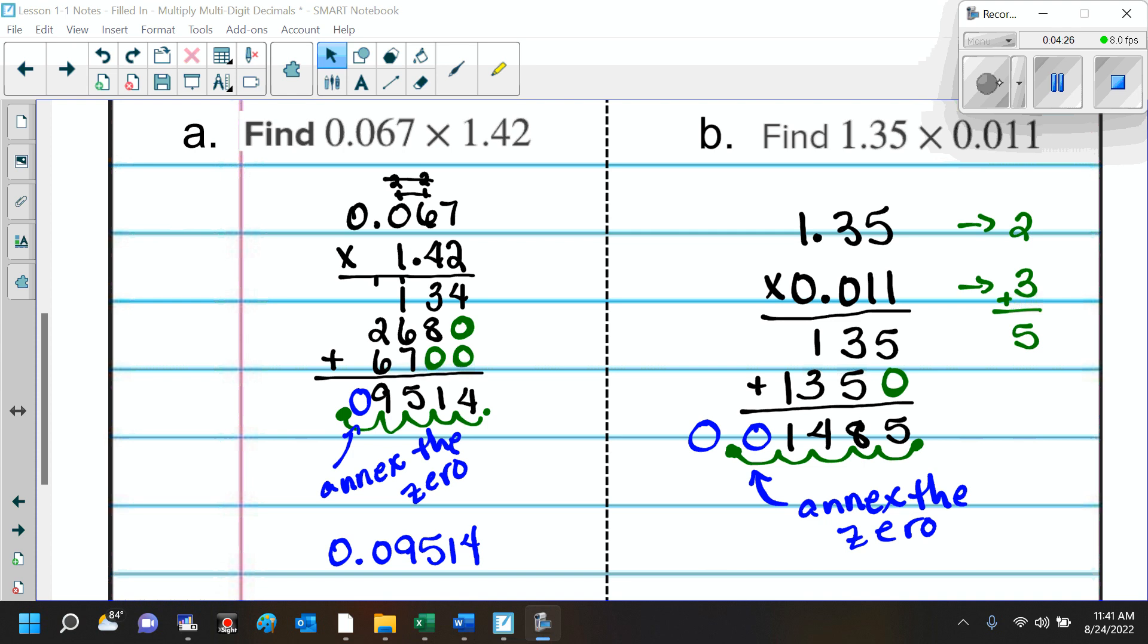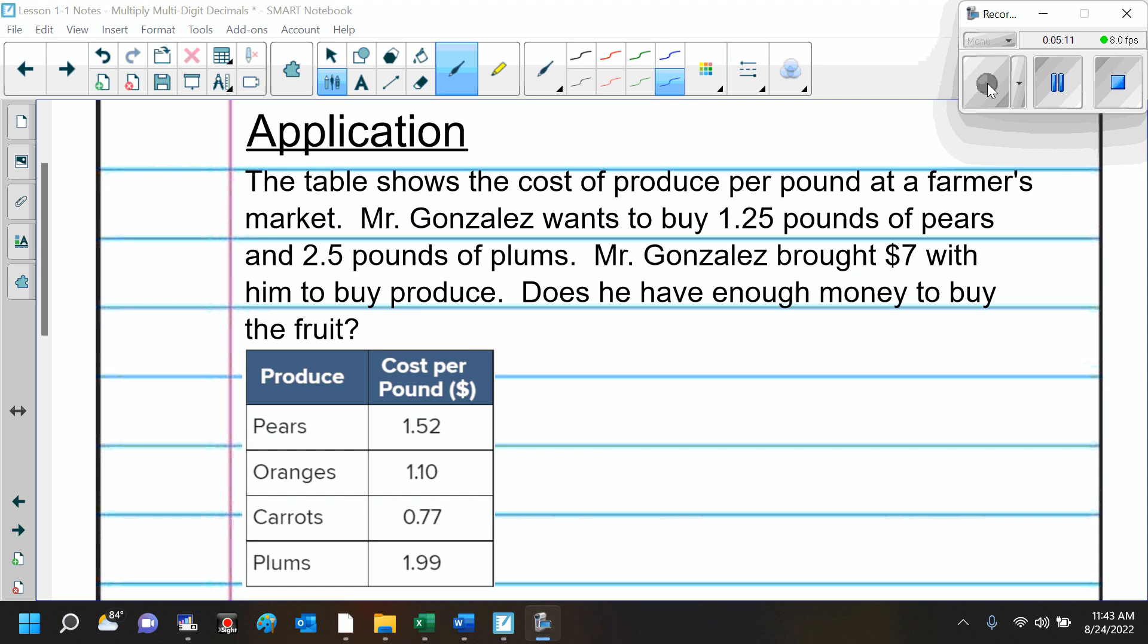And again, I know I said I like to put the longer number on the top, but those are just ones. So, I put the ones on the bottom so that all I have to do is just multiply by one each time. So, here we have two numbers behind the decimal on the first digit, three numbers behind the decimal on the second number. So, that means we have five numbers behind the decimal point. So, one, two, three, four, five. We had to annex a 0 here and then make sure to put that 0 in the front. Very good.